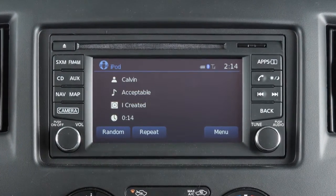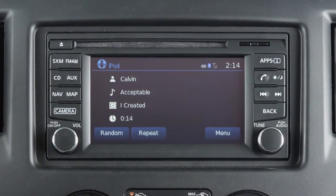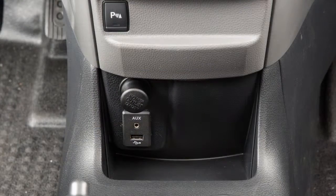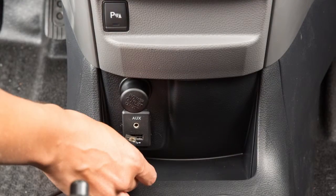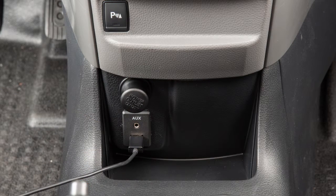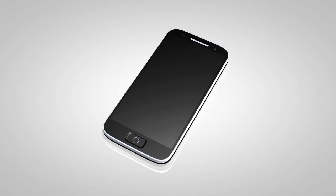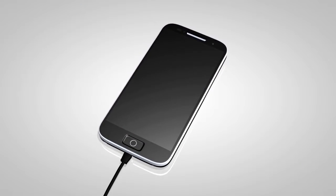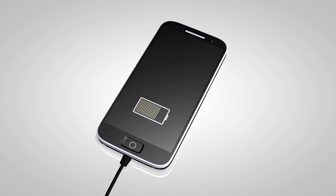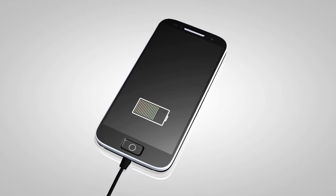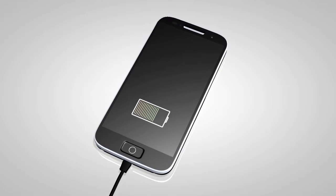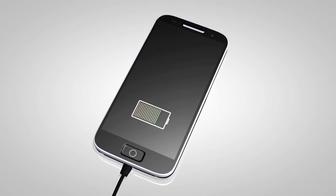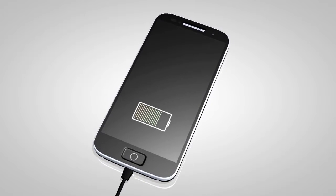To use an iPod with the audio system, connect the cable supplied with your iPod to the USB jack, then connect the other end of the cable to your iPod. If compatible, the battery of your iPod will charge while connected to the vehicle.